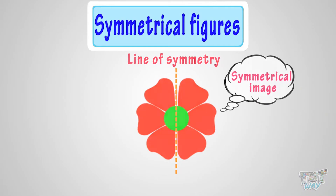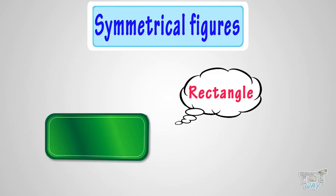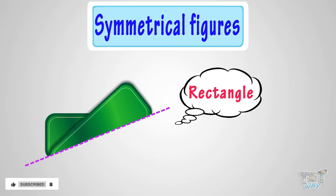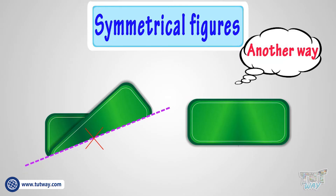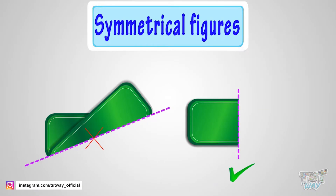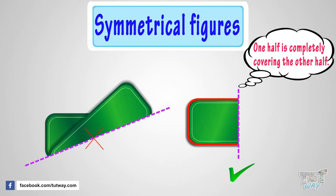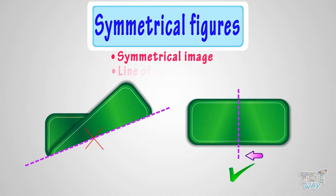Now let's try the same with another figure. Here is a rectangle. Let's fold this rectangle halfway. If we fold it here, it does not work — one half does not cover the other half. So let's try another way. Let's fold it this way. If we fold it here, it works — one half is completely covering the other half. So we got to know that this figure is symmetrical, and this line of fold is the line of symmetry.